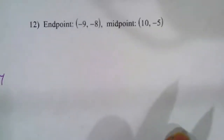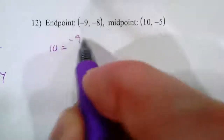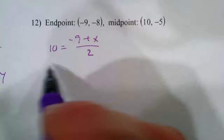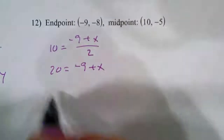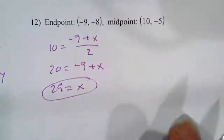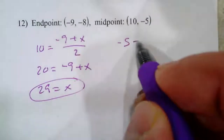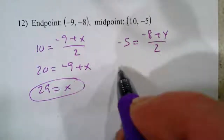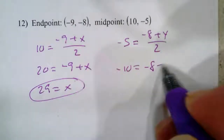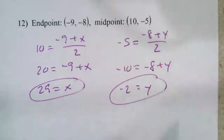In this last example, we would have 10 equals negative 9 plus x over 2. Multiply both sides by 2, then add 9 to both sides to get x. Then we would have negative 5 equals negative 8 plus y over 2. Multiply both sides by 2, then add 8 to both sides to find our y-coordinate.